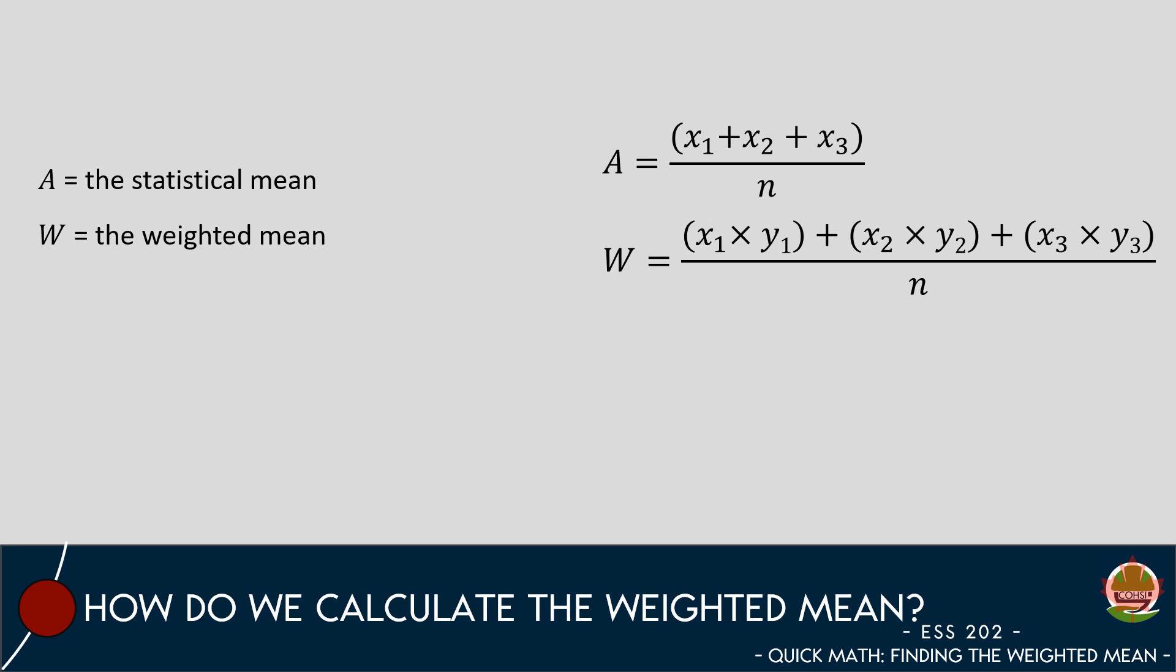To calculate the weighted mean, we need to take one extra step. We first multiply each data point by its given weight. Once we have completed those calculations, we then proceed as if we were calculating the statistical mean.